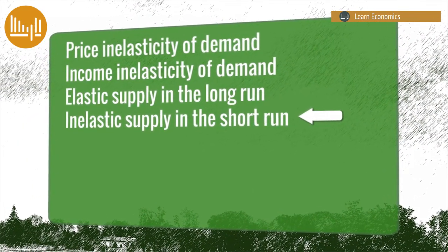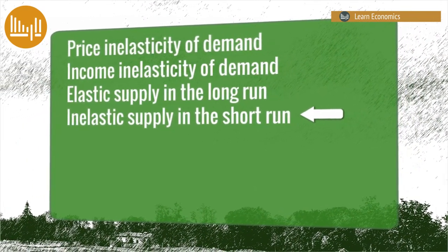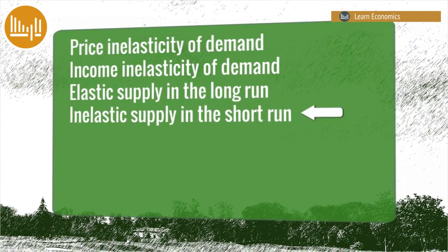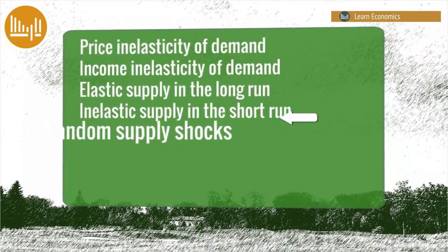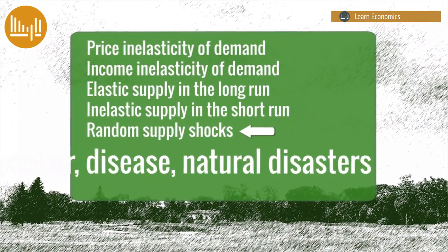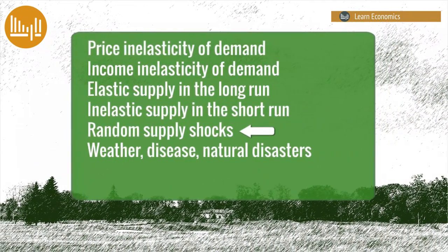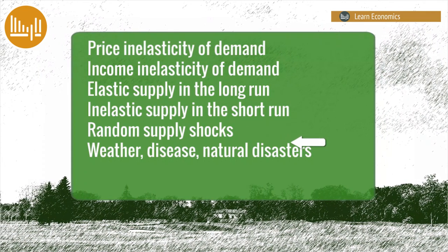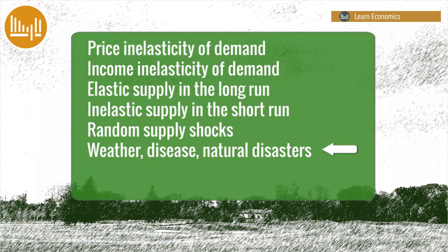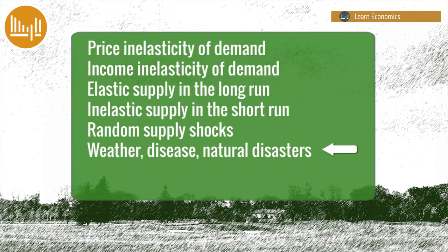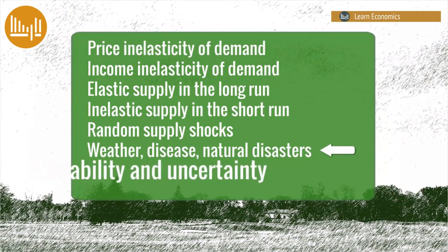Finally, agricultural products are very susceptible to random supply shocks, including poor weather, disease, and natural disasters, all of which create instability and uncertainty.